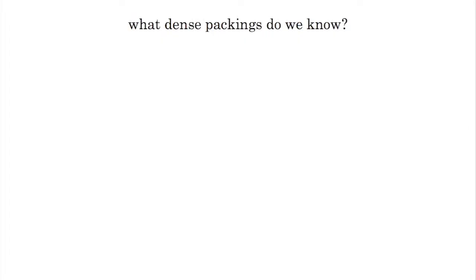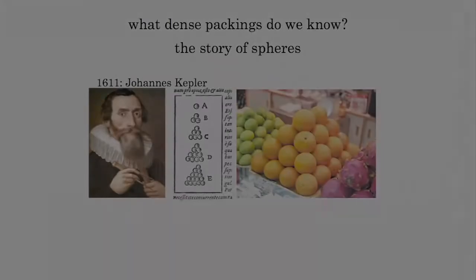What dense packings do we know? Let's take a sphere, for example. A sphere is a very simple object — from any angle that we look at it, it looks the same. So what is the densest packing of spheres? You don't have to go very far to figure it out. In fact, you can walk into any grocery store and you will see the densest packing of spheres, which is the familiar orange stacking shown here. As far back as 1611, Johannes Kepler, the famous mathematician and astronomer, conjectured — made a mathematical hypothesis — that the familiar orange stacking is the densest way to pack spheres in space.